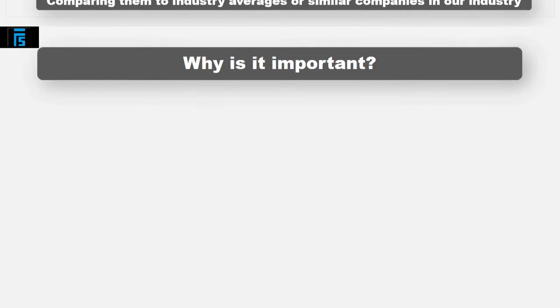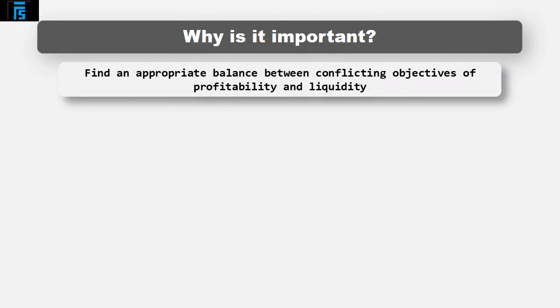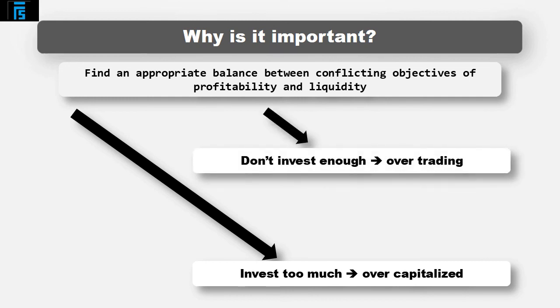Why is it important? Companies need to find an appropriate balance between the conflicting objectives of profitability and liquidity. Failure to get this balance right can have damaging and potentially catastrophic consequences. An organisation that invests too much in working capital is sometimes referred to as overcapitalised. Conversely, a company that does not invest enough, with insufficient long-term finance to support it, is said to be over-trading. Thank you.